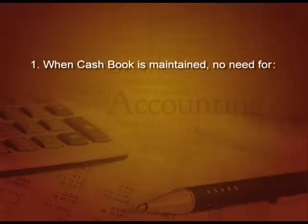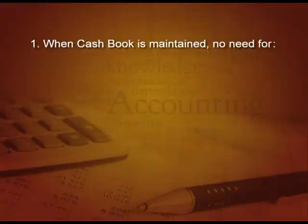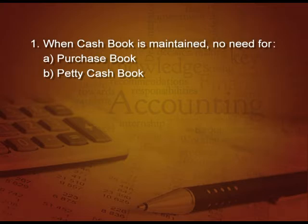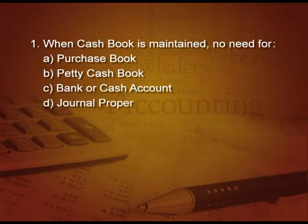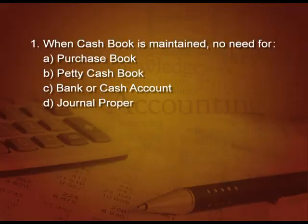Let us check what we have understood. First question: when cash book is maintained, there is no need for — A purchase book, B petty cash book, C bank and cash account, D journal proper. The answer is C — there is no need for bank and cash account, so the right answer is C.